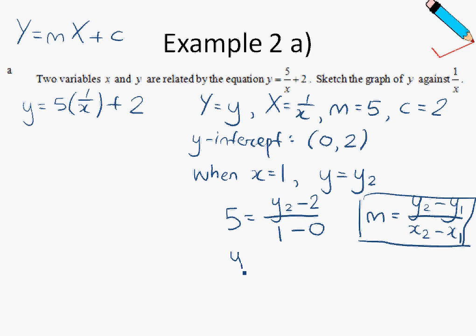So solving this, I will have y2 is equals to 5 plus 2, which is just 7. Okay, so I have another point on the line. So with that piece of information, I can sketch my graph.